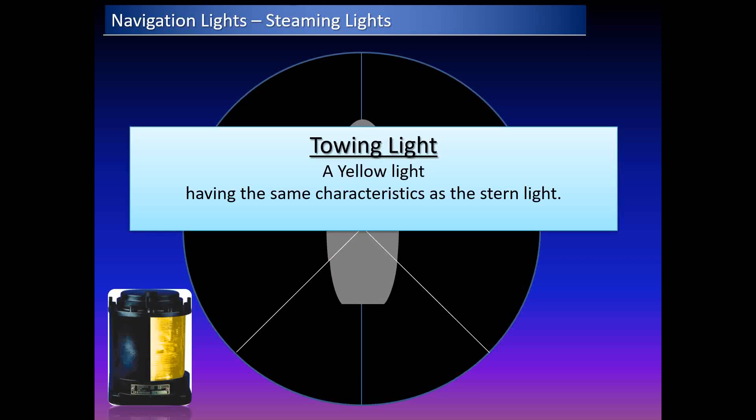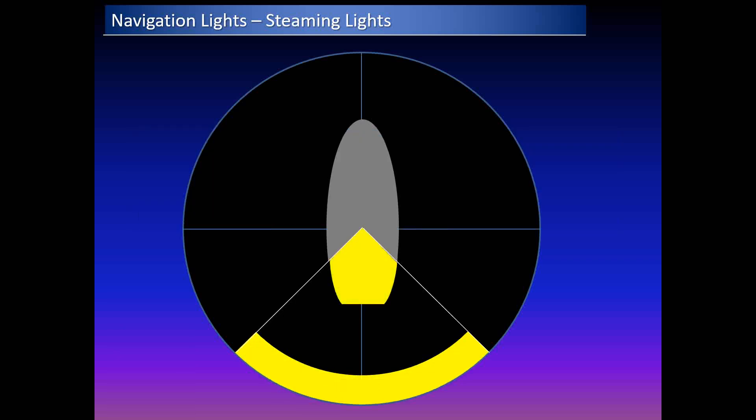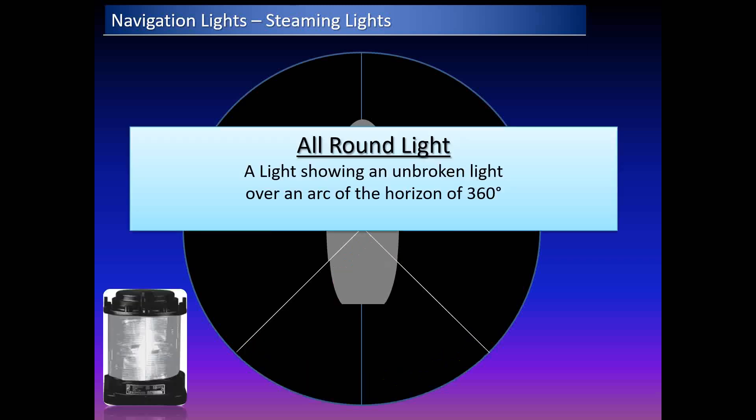The towing light is classified as a yellow light having the same characteristics as a stern light — that means an unbroken light over an arc of 135 degrees, showing 67.5 degrees from right aft on each side of the vessel, both port and starboard.